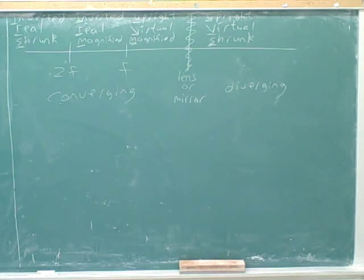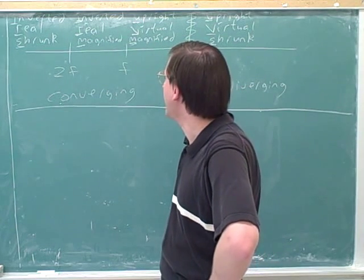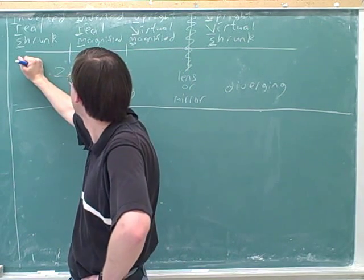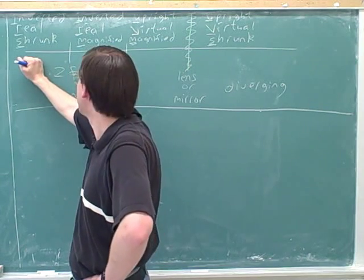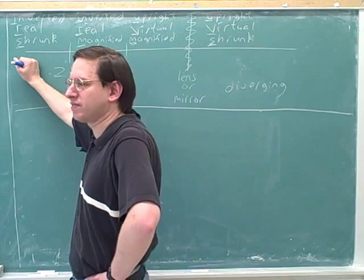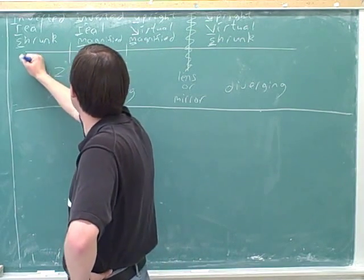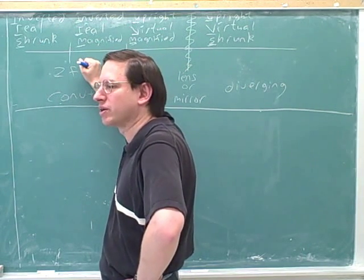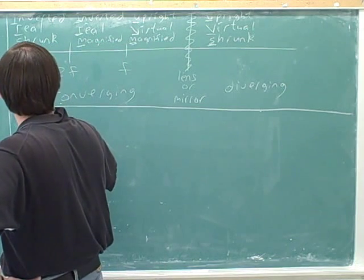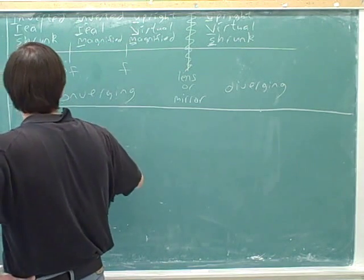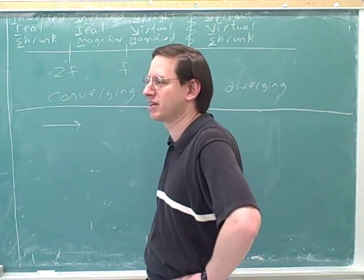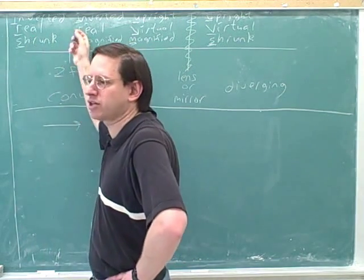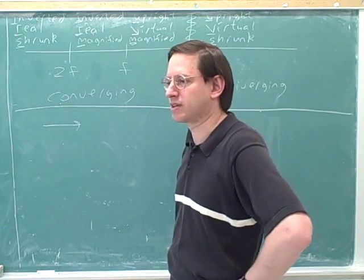Let's say we have a converging device and put the object far out — the image will be real, inverted, and shrunk. If we move the object in to between twice the focal length and the focal length, the image gets bigger. In general, as we move the object in this direction with a converging device, the image size gets larger, even before reaching the magnified region — this shows the general direction of change.